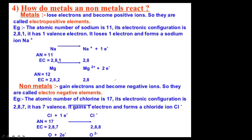Why are non-metals electronegative in nature? Due to the presence of 5 to 7 electrons in the valence shell, non-metals have a very strong tendency to gain electrons to follow the octet rule and become stable. That is why they gain electrons readily and form electronegative ions. Non-metals cannot lose electrons easily to form positive ions — they are not electropositive, they are electronegative. From this small topic of electropositive and electronegative elements, you will get at least 2 questions — possibly in paragraph-based or case study-based question formats.